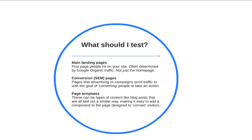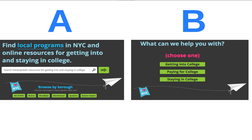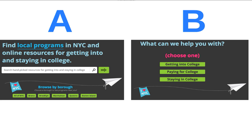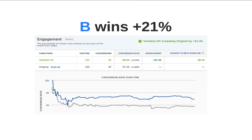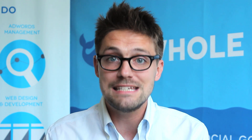Let's go into an example: the main landing page of CollegeLine NYC, a former client of Whole Whales. Looking at option A and option B, you can see the differences. One is making sure you can search and find what you're looking for, while option B gives quick options for what you're going to click on. The goal was to increase engagement, stop bounce rate, and help people get where they're going. Option B outperformed A by 21% — a simple change, huge results.